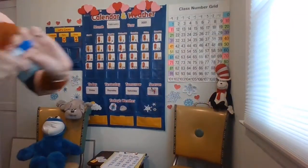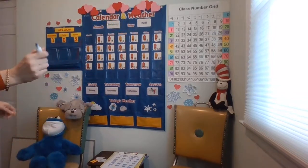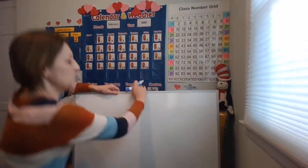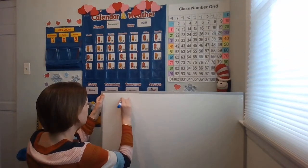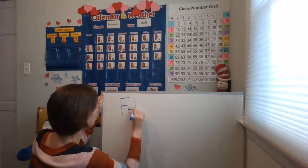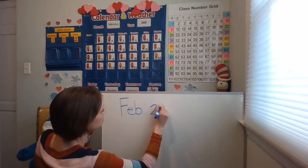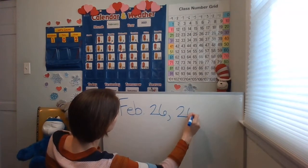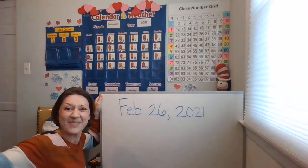Let's go ahead and quickly write today's date. Take the cap off of your marker and put it on the bottom so you do not lose it. February 26th, 2021. Start with your capital F, E, B, period, finger space, 26, comma, finger space, 2021. All right, mathematicians, write it down.